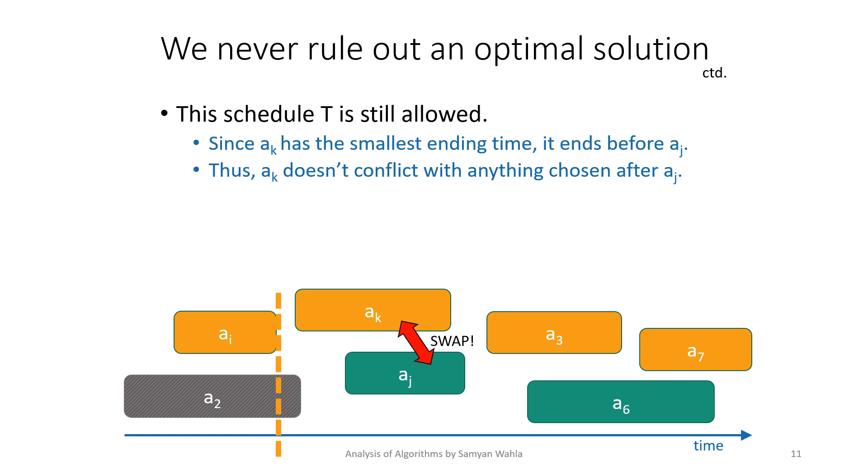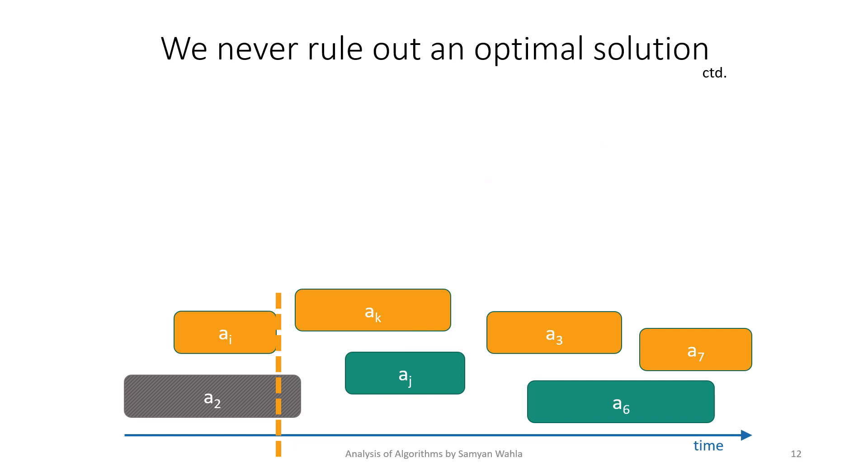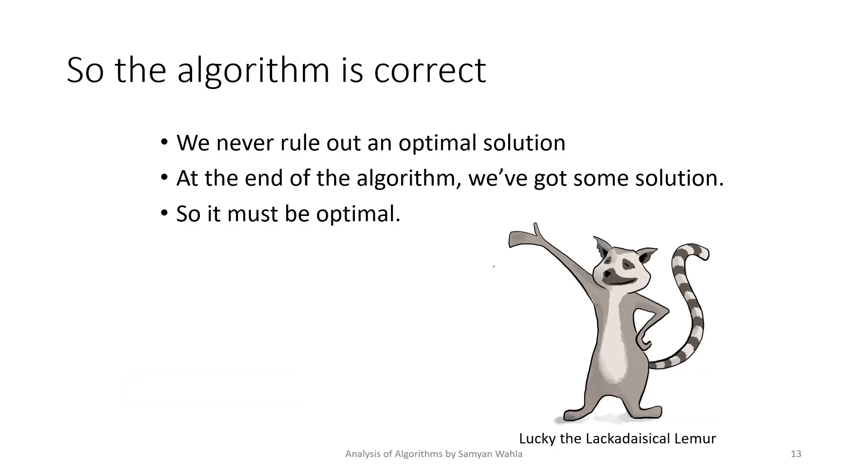We can say that our schedule T should be an optimal solution. Since ak has the smallest ending time, it ends before aj, so there is no conflict. The solution T is still optimal. So our algorithm is correct because we have proved that we have taken the choice that leads to the optimal solution.